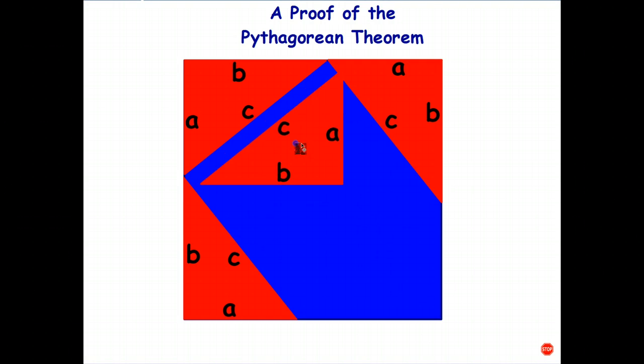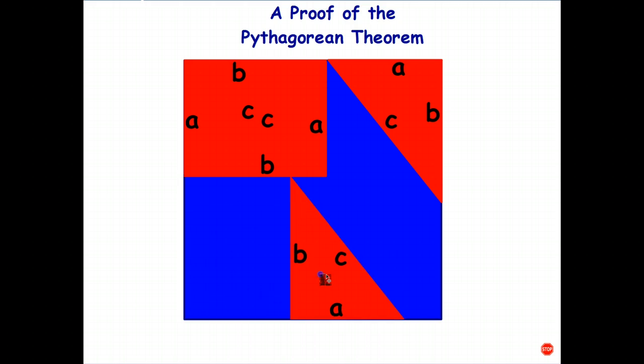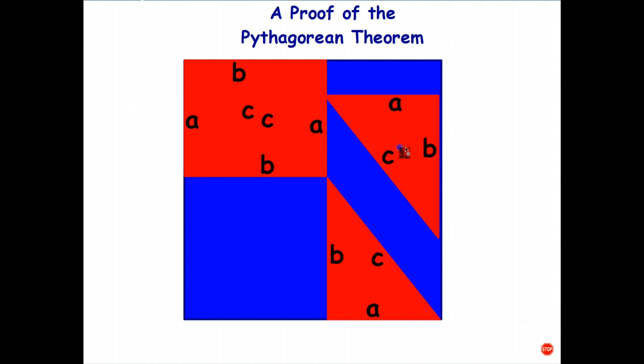Now all I'm going to do is rearrange those pieces. So I'm going to just move that to there. That to there. And that to there. What's the area of the blue part that we can see now?